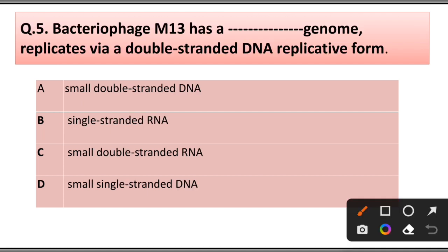Question number 5: Bacteriophage M13 has this genome: A) Replicates via double-stranded DNA replicative form, B) Small double-stranded DNA, C) Single-stranded DNA, D) Small double-stranded DNA, small single-stranded DNA.